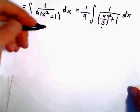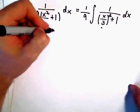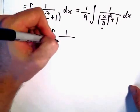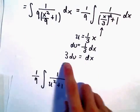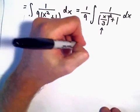So in this case, after we do our u substitution, there's our 1 ninth that was out front, we would have 1 over u squared plus 1. And our dx is going to be 3 du.